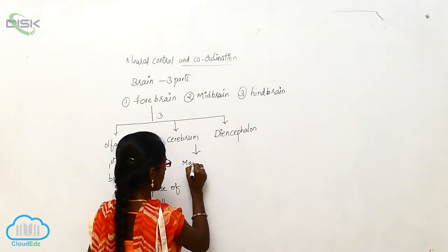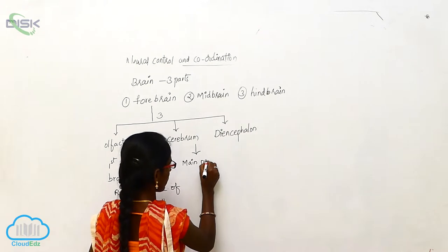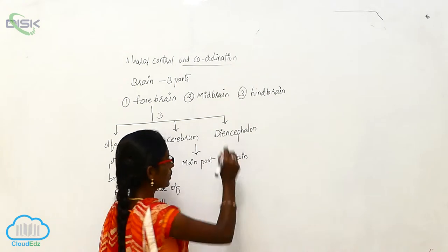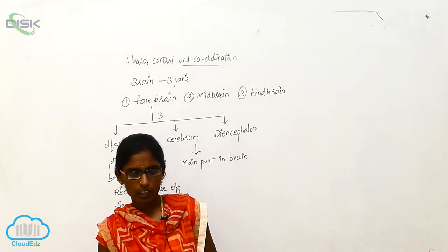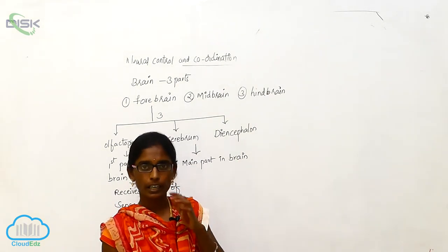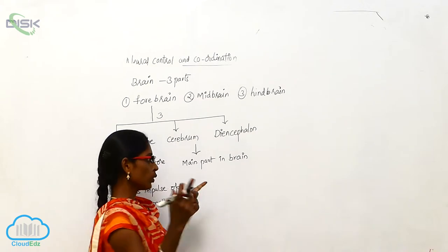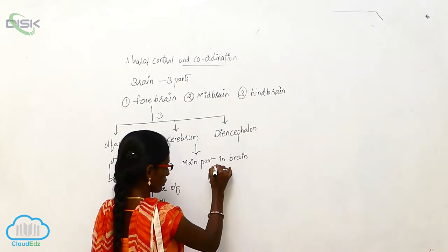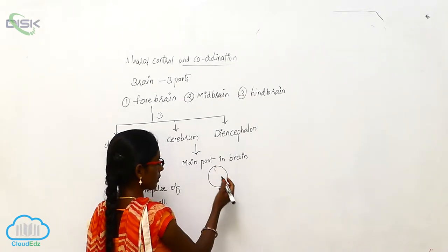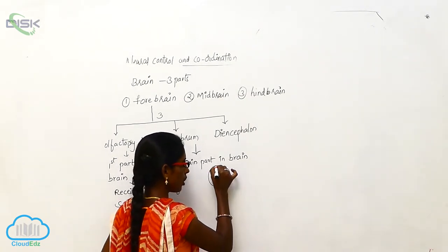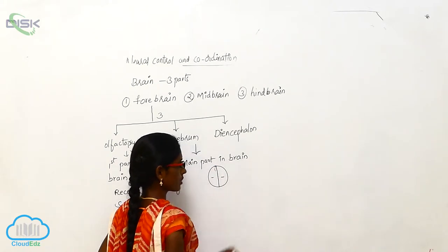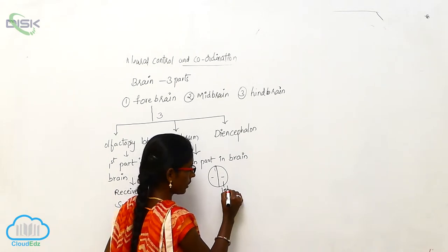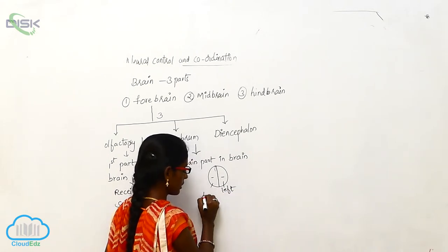The cerebrum is the main part of the brain. The cerebrum is longitudinally divided into two parts — the left and right cerebrum.